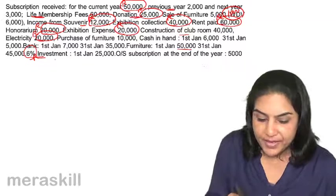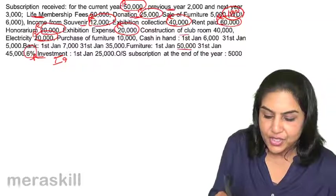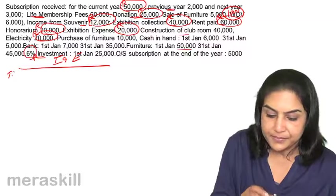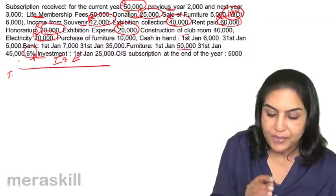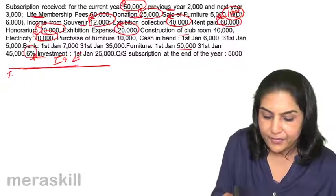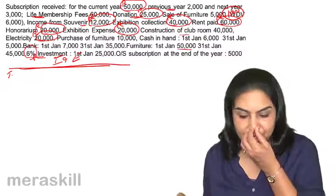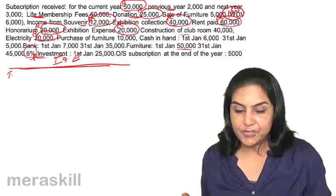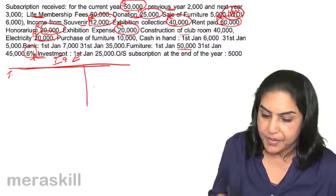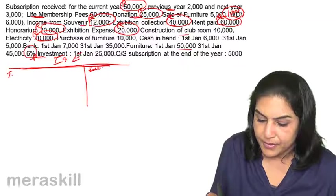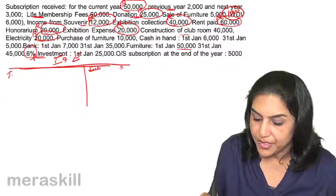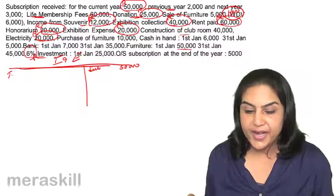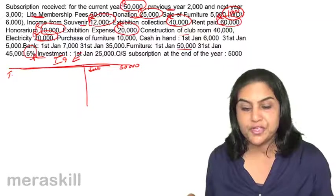So how would we prepare the income and expenditure account? Expenditures will come on one side. Starting with income: subscription — 50,000 for the current year. Previous year we won't bring in, next year we won't bring in. Life membership fees we will capitalize.